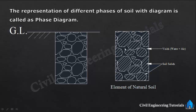The void space may be filled with water, air, or partly with water and partly with air. If we take dry soil mass, then the voids are filled with air only. If we take perfectly saturated soil, then the voids are completely filled with water. If we take partially saturated soil, then the voids are filled with water and air.